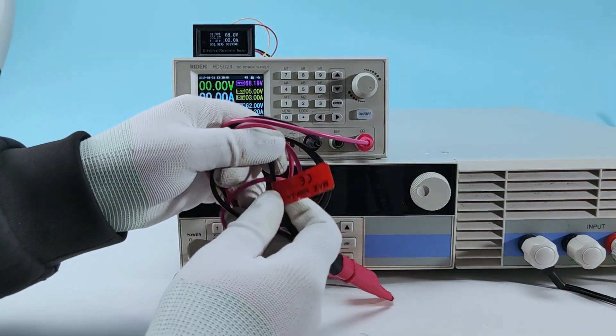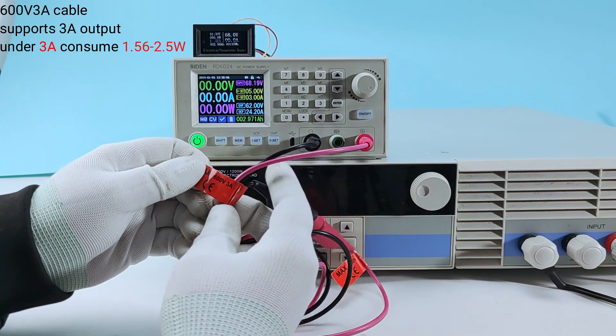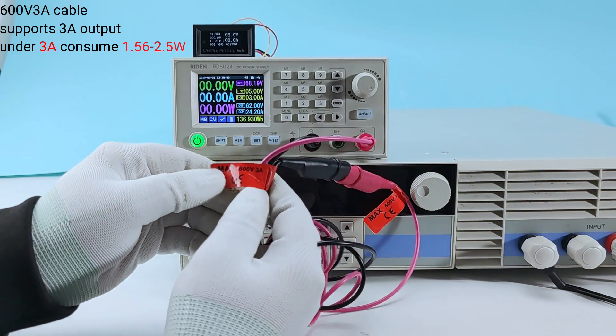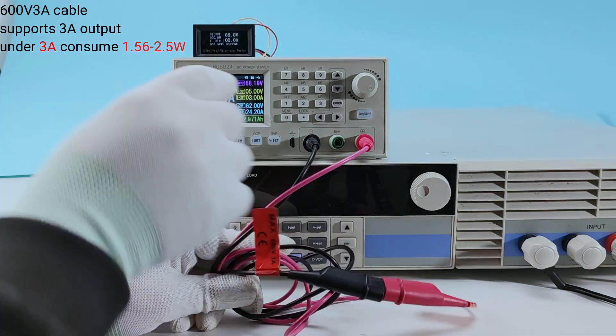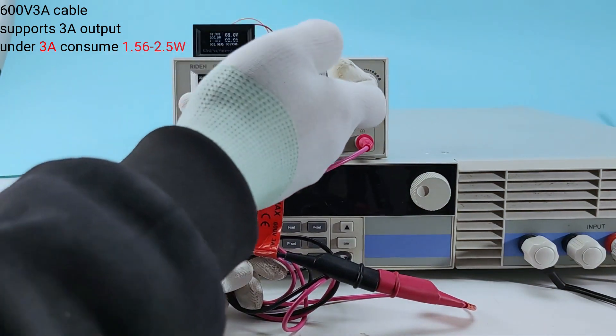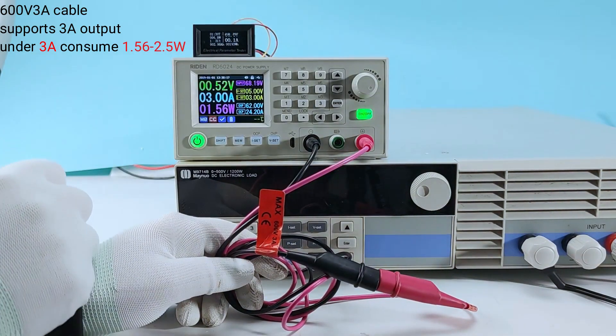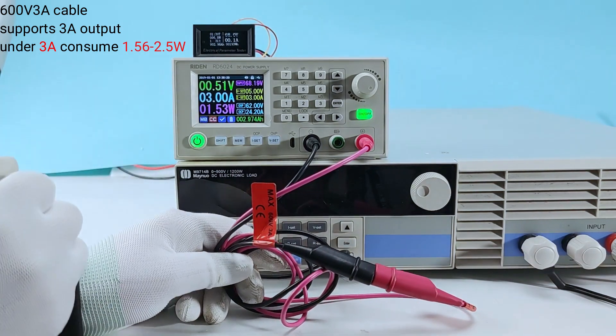This cable shows that it supports 600V and 3A. So we set 3A output and we turn on the output. You can see it is powered.